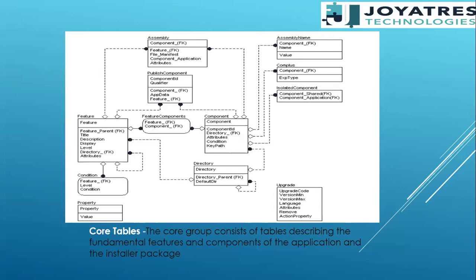Then is the upgrade table. What it does basically — if you have an application version one and the same application version two, you have to upgrade it. You do not have to write a script if you are aware of this upgrade table. Via the upgrade table, certain things we have to write. These are the particular attributes of the upgrade table: upgrade code, minimum, maximum, language, attributes, remove, action, property. It is very simple — just remember a few things and you would be able to upgrade your application to the new version.